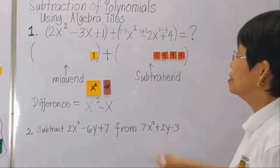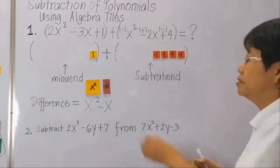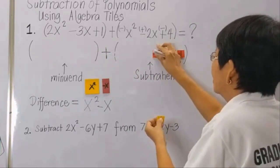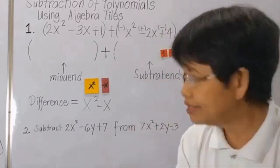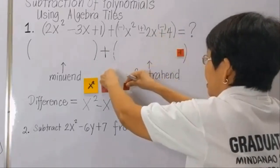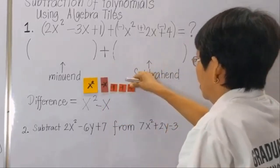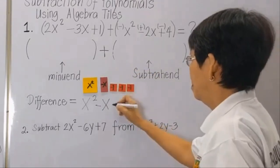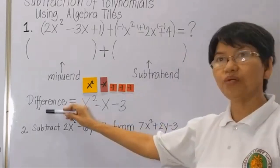And positive 1 minus 4. We have just one zero pair set aside. What is left? We have negative 3. So our answer — our difference — is x squared minus x minus 3.